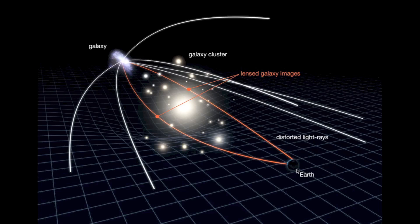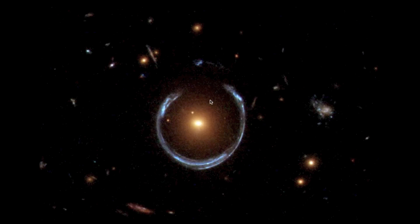If we're on Earth looking toward a galaxy cluster, and there's a galaxy behind that cluster, light from the background galaxy moves through the cluster but gets warped and curved following the warp in space-time. This is called gravitational lensing. From Earth, we see that distant galaxy imaged and squashed into several different arcs around the cluster. For example, here is a real photograph where light from a galaxy behind an elliptical galaxy has been warped into almost a complete ring.